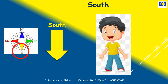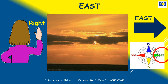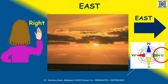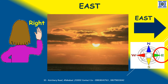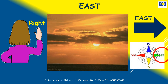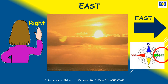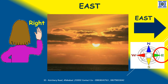Next is the South direction. Children, how will you know which is your South direction? Just put your hands down. The down direction is the South direction. The next direction is East. Children, how will you know which is your East direction? Just lift your right hand and point it. The direction in which the right hand points is the East direction. The Sun rises from the East direction.